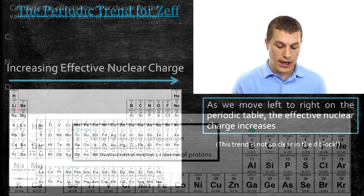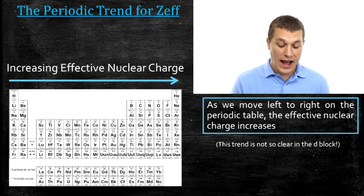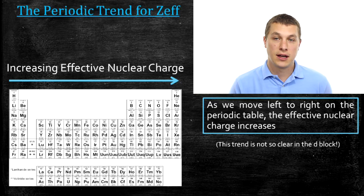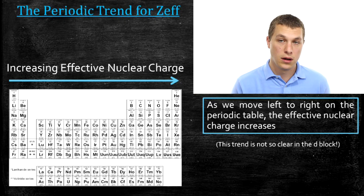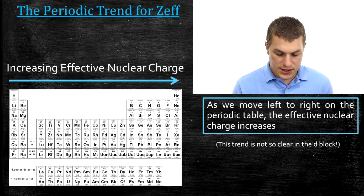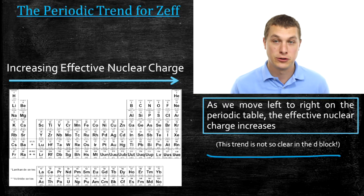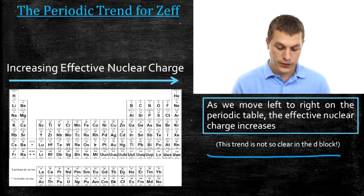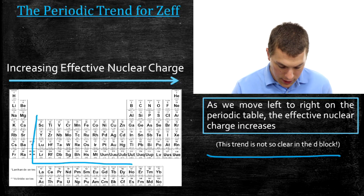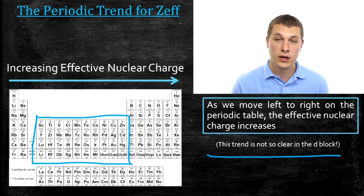As we go left to right on the periodic table, we increase effective nuclear charge, which means we can just look at the periodic table and put elements in order based on their effective nuclear charge. One thing to keep in mind: this trend doesn't apply so well in the D block. Calculate the effective nuclear charge for a few D-block elements and take a look — things get a little weird there.